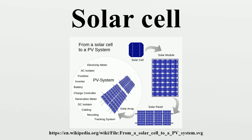In 1888, Russian physicist Alexander Stoltov built the first cell based on the outer photoelectric effect discovered by Heinrich Hertz in 1887. In 1905, Albert Einstein proposed a new quantum theory of light and explained the photoelectric effect in a landmark paper, for which he received the Nobel Prize in Physics in 1921. Vadim Lashkarriov discovered PN junctions in CuO and silver-sulfide protocells in 1941. Russell O. patented the modern junction semiconductor solar cell in 1946 while working on the series of advances that would lead to the transistor.